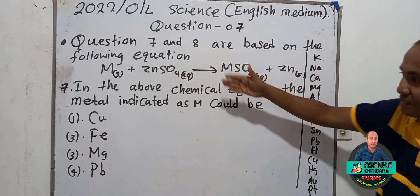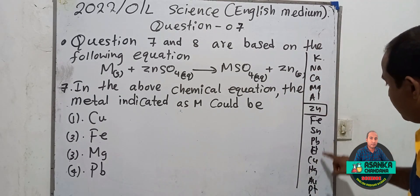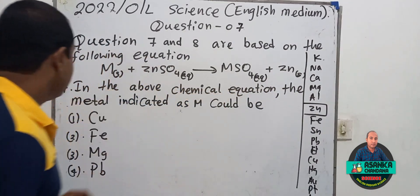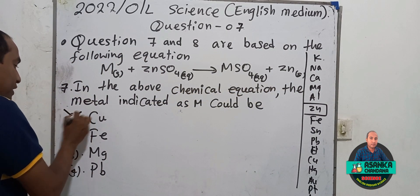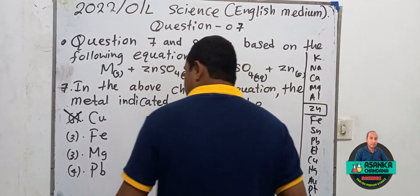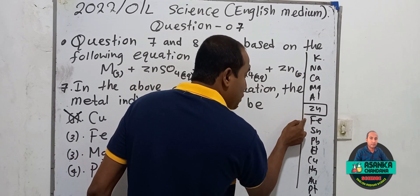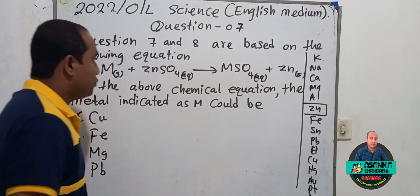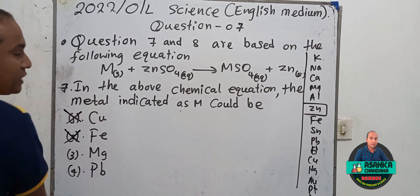But when we consider the answer options: copper is located below zinc in the reactivity series. Therefore, the reactivity of copper is less than the reactivity of zinc, so answer number one is wrong. The second answer contains iron. The reactivity of iron is also less than the reactivity of zinc. Therefore, this chemical reaction would not occur with iron either, so answer two is also wrong.